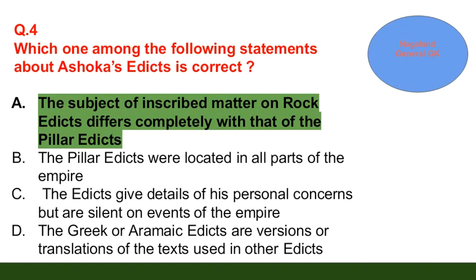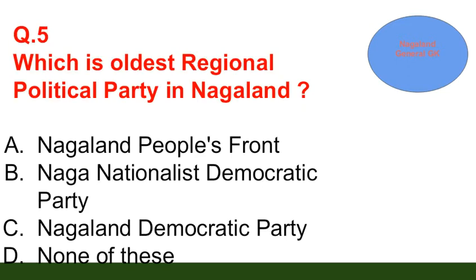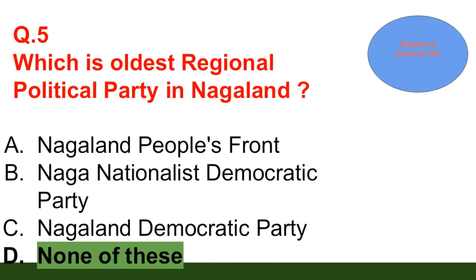Question number 5: Which is the oldest regional political party in Nagaland? Option A: Nagaland People's Front; option B: none of these. The correct answer is option B — none of these.